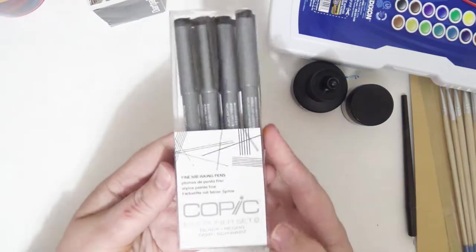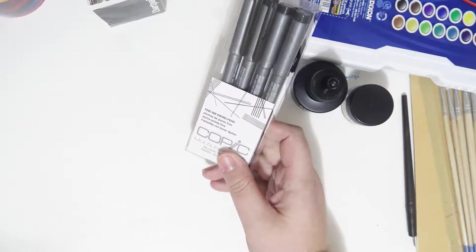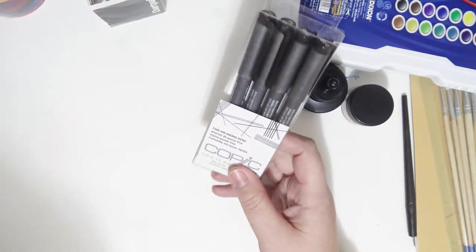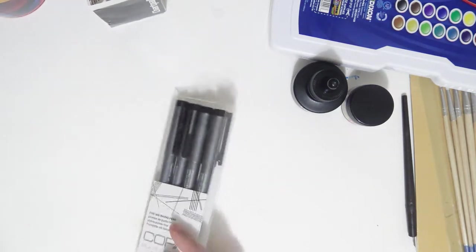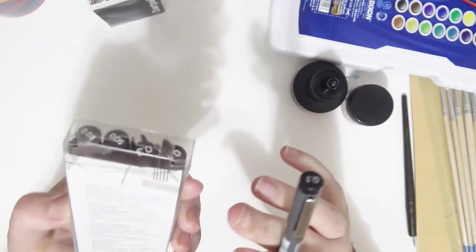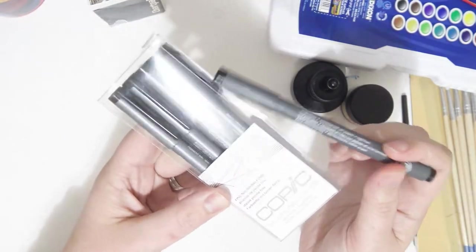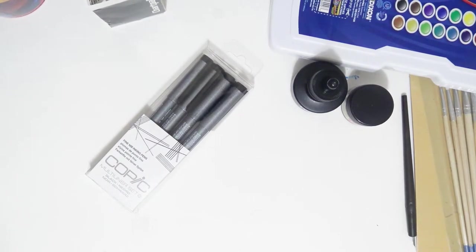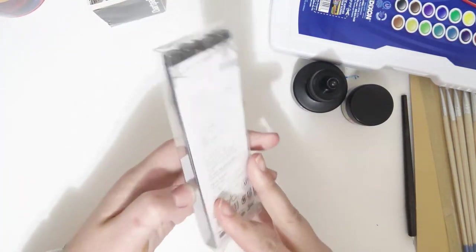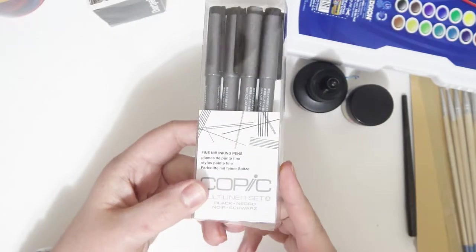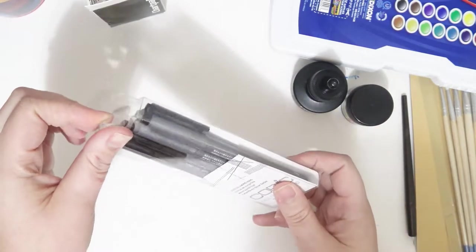I also got some Copic multi-liners. I have the Stedler pigment liners, but I've been watching a bunch of videos on watercolor and stuff. And I've seen a couple of people say that the Copic ones are really waterproof and won't go anywhere. And I really want to be able to do outlining and stuff on my watercolors before I lay down any actual water. And I have heard that these ones will not budge. So, I got these and these are pricey, pricey.